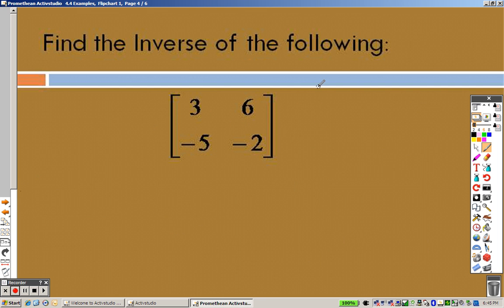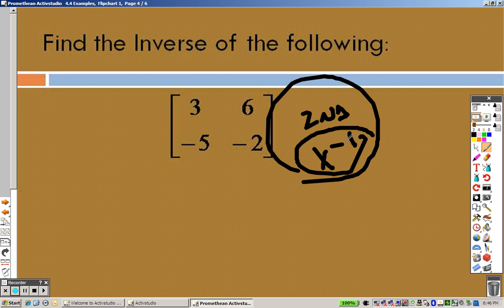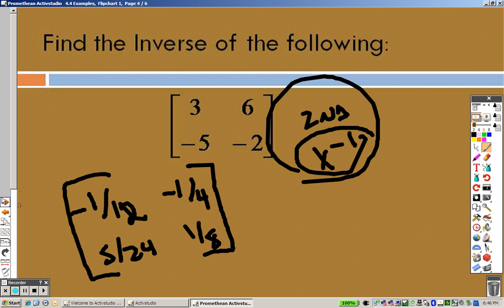So going over to the next problem. Right? The next problem, press 2nd, and X to the negative 1. And go over to Edit and press Enter. It's still a 2 by 2. Press 3, Enter, 6, Enter, negative 5, Enter, negative 2, Enter. And press 2nd mode, so we're out of there. All right. Press 2nd, X to the negative 1 again. And now you want A, and just press this, X to the negative 1. That'll find the inverse, and press Enter. Go to Math and Frac again, and we end up getting negative 1 twelfth. We end up getting negative 1 fourth. We end up getting 5 over 24 and 1 eighth. And there is your answer for the inverse for that one.